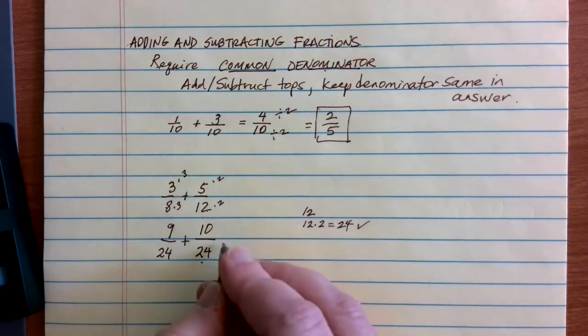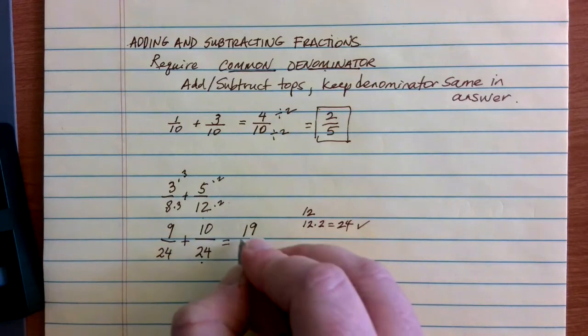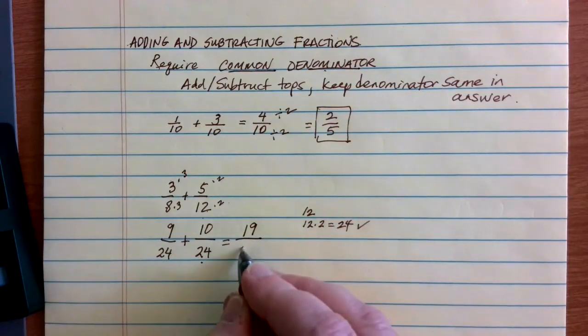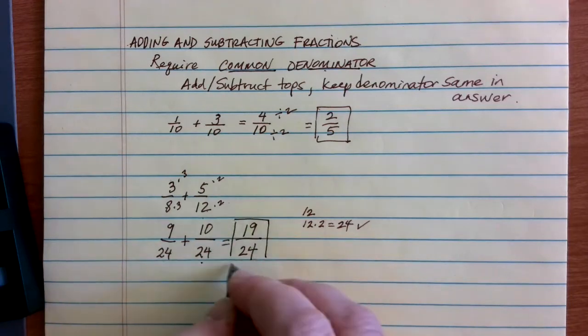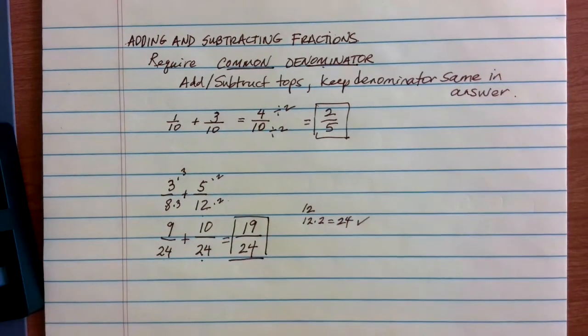Once you've done that, we can go ahead and add the tops. 9 plus 10 is 19. And then remember, we worked so hard to get that common denominator—keep that denominator the same as you come to your final answer. And so in this case, I end up with 19/24 as my solution for adding these two fractions together.